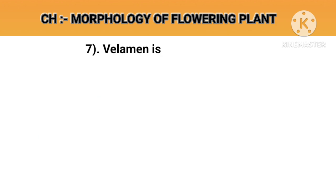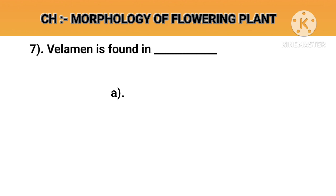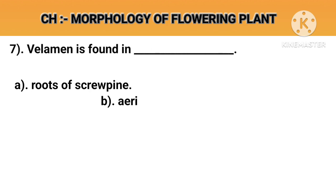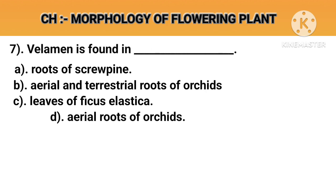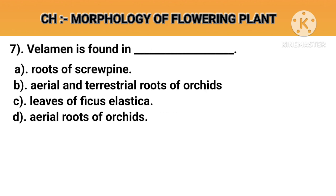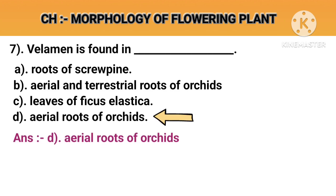Question number 7. Veliman is found in. Option A: Roots of Scrupine. Option B: Aerial and terrestrial roots of orchid. Option C: Leaves of Ficus elastica. Option D: Aerial roots of orchid. Answer D: Aerial roots of orchid.